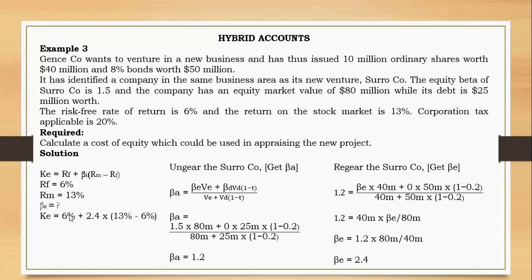Now applying the CAPM formula: cost of equity = Rf + beta × (Rm − Rf) = 6% + 2.4 × (13% − 6%) = 6% + 2.4 × 7% = 6% + 16.8% = 22.8%. The cost of equity that should be used to appraise the new project is 22.8 percent.